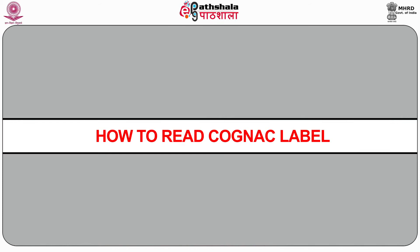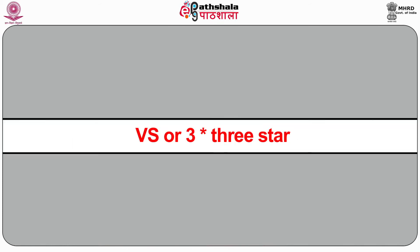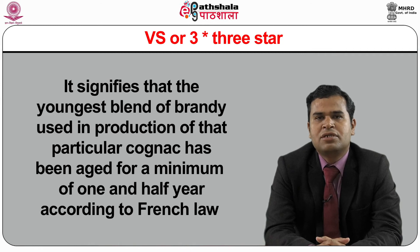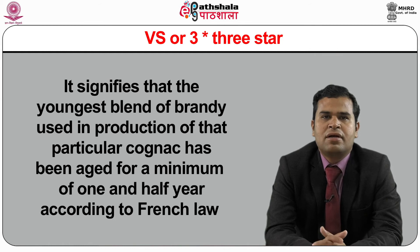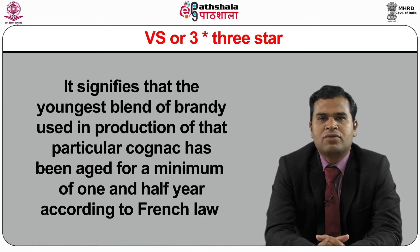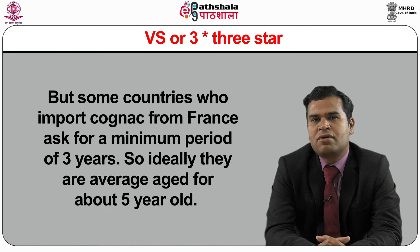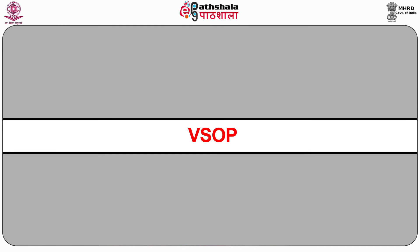Now, how to read the Cognac label: if VS is written on a Cognac, it means Very Special and is equal to 3 star. It signifies that the youngest blend of brandy used has been aged for a minimum of one and a half years according to French law, though some importing countries ask for a minimum of 3 years, so they are ideally average aged about 5 years. VSOP stands for Very Superior Old Pale — used by Cognacs aged for much longer than 5 years, but the label indicates a minimum ageing of four and a half years.